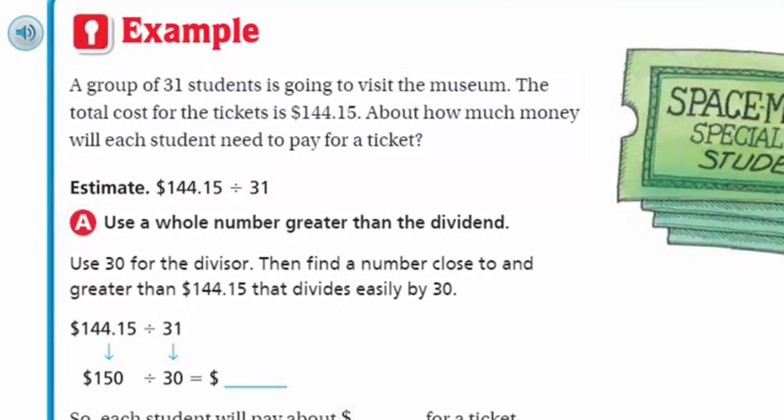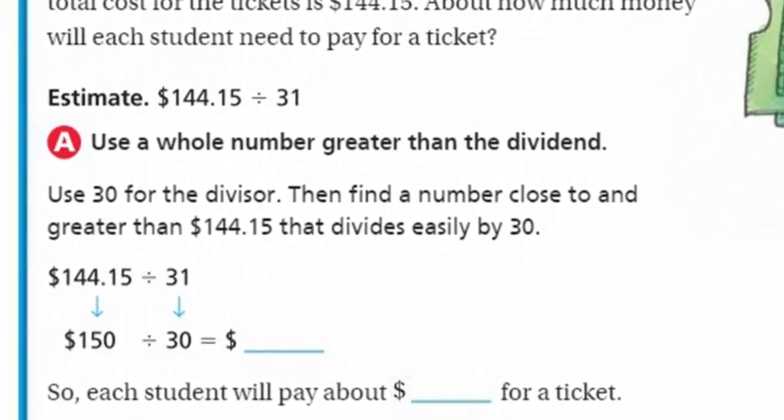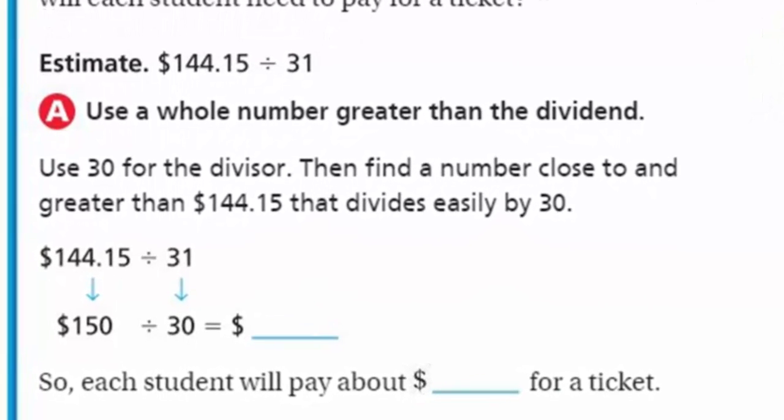It says use a whole number greater than the dividend. Use 30 for the divisor, then find a number close to and greater than $144.15 that divides easily by 30. They have that $144.15, they move that up to 150. By changing that number and changing the divisor to 30, if we were to drop those two powers of 10, we would simply have 5. So each student will pay about $5.